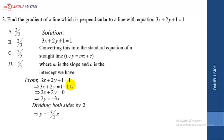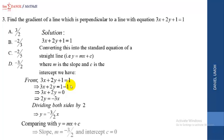Comparing y equals minus 3 over 2 x with the standard form y equals mx plus c, we can see that the slope m1 is minus 3 over 2, and the intercept c is 0.